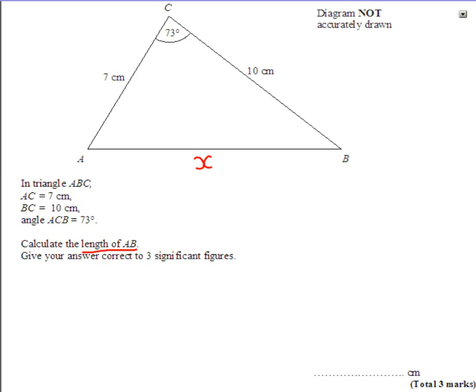Now because there are one, two, three sides involved and one angle, it means that we're going to be using the cosine rule. Now the cosine rule is given to you at the front of your exam booklet, but you need to write down what you're using anyway.